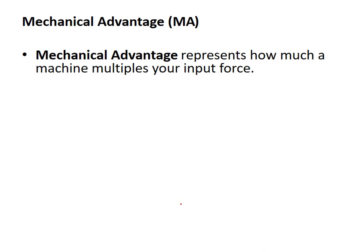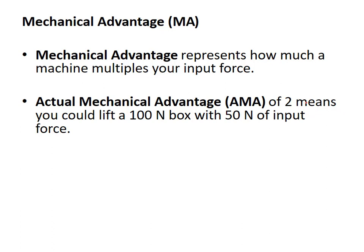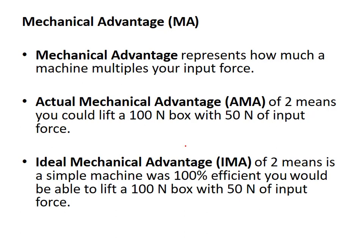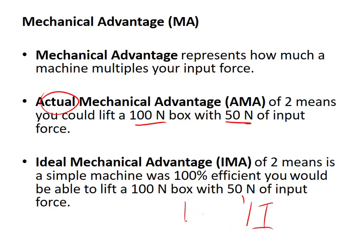Mechanical advantage represents how many times you're multiplying your input force. For example, an IMA of 2 means you could lift a 100 N box with only 50 N — half the force, multiplied by 2 to get 100. Actual mechanical advantage (AMA) is what's really happening for the machine — the actual force out versus force in. Ideal mechanical advantage (IMA) is based on geometry, what you theoretically should get, assuming no friction or energy loss.